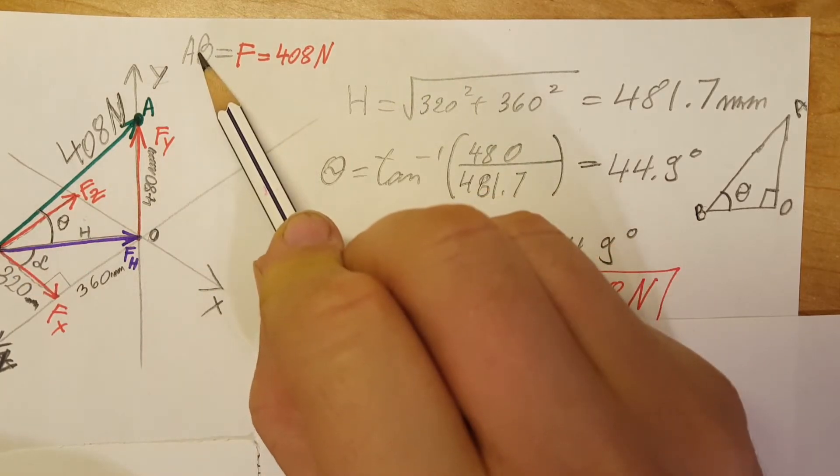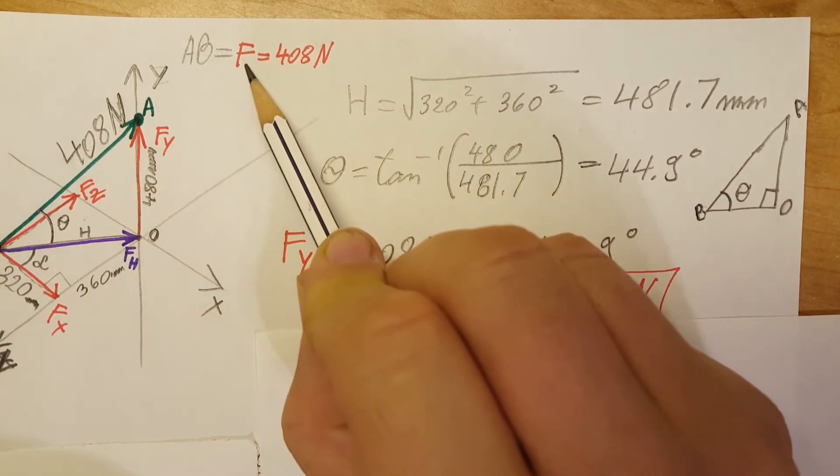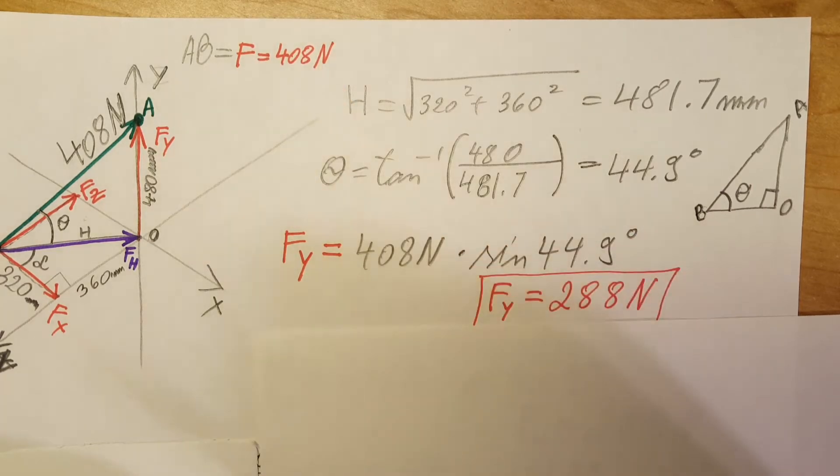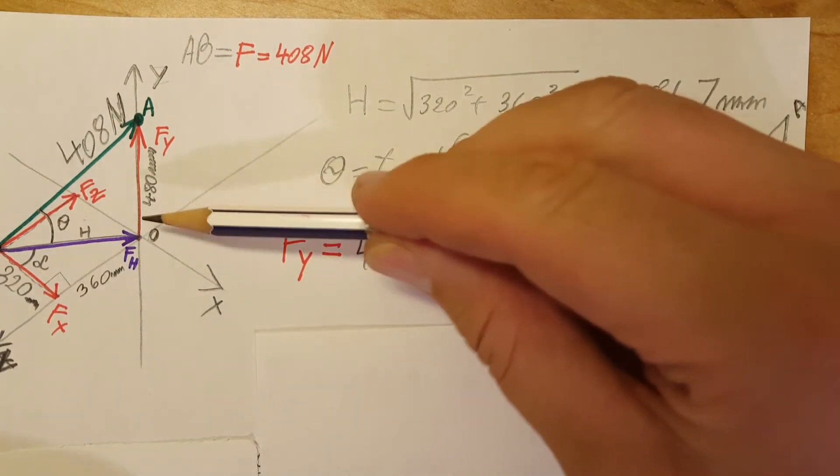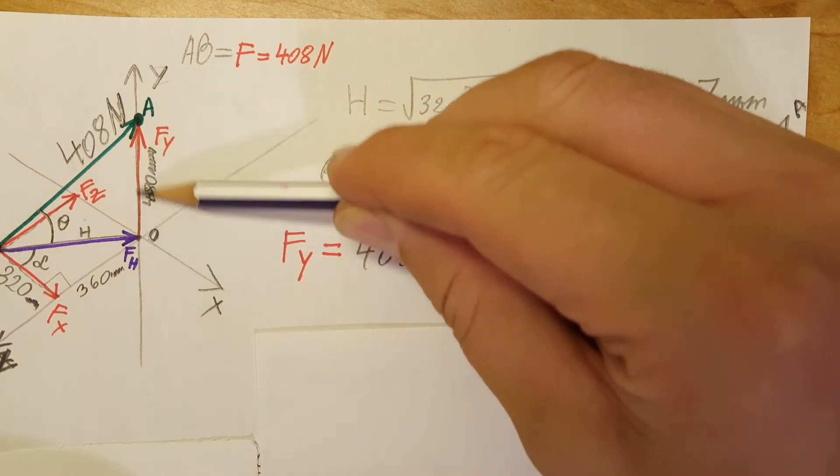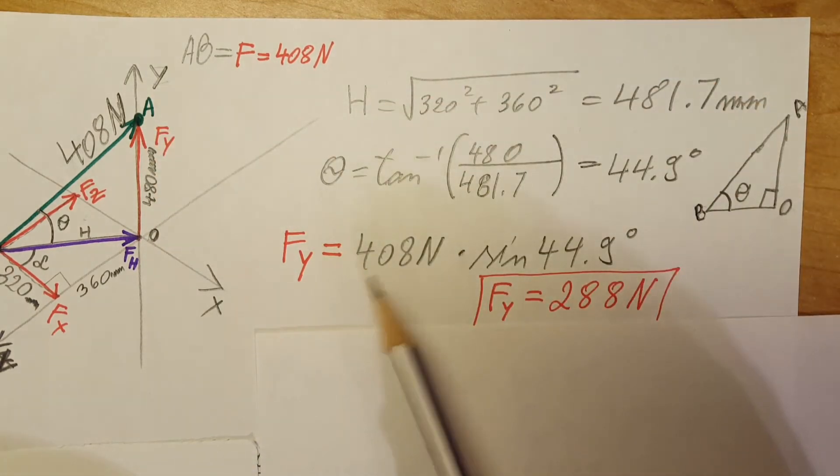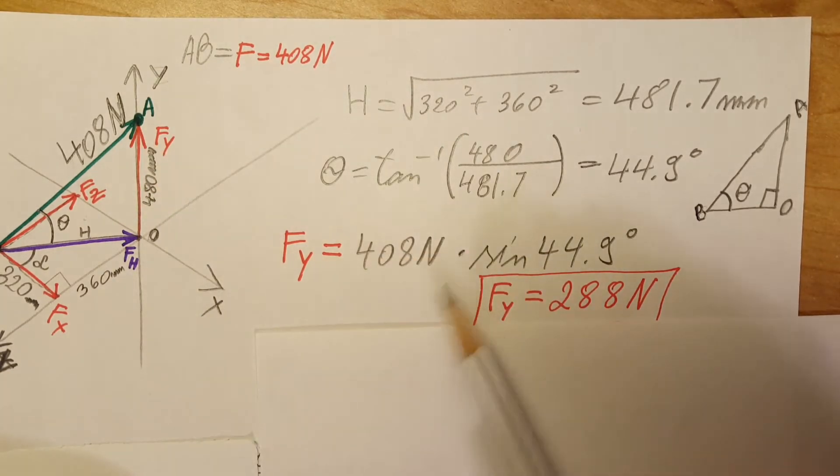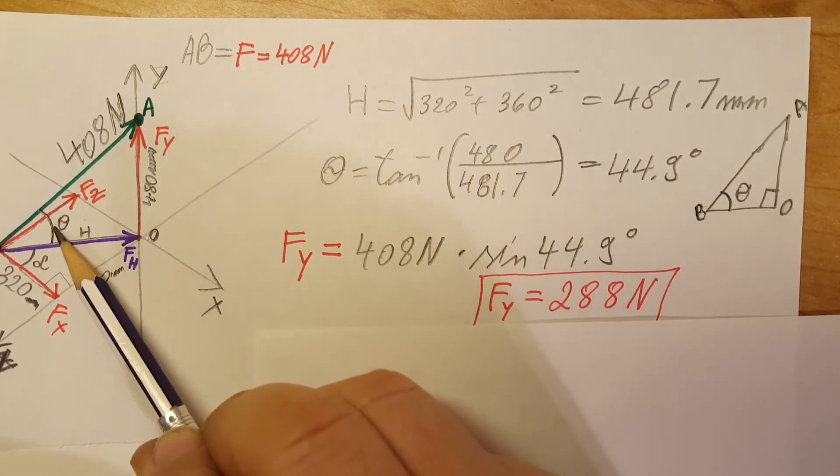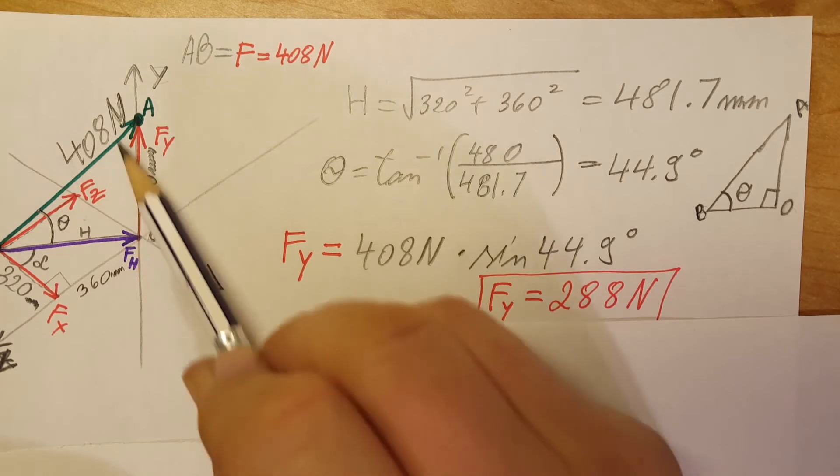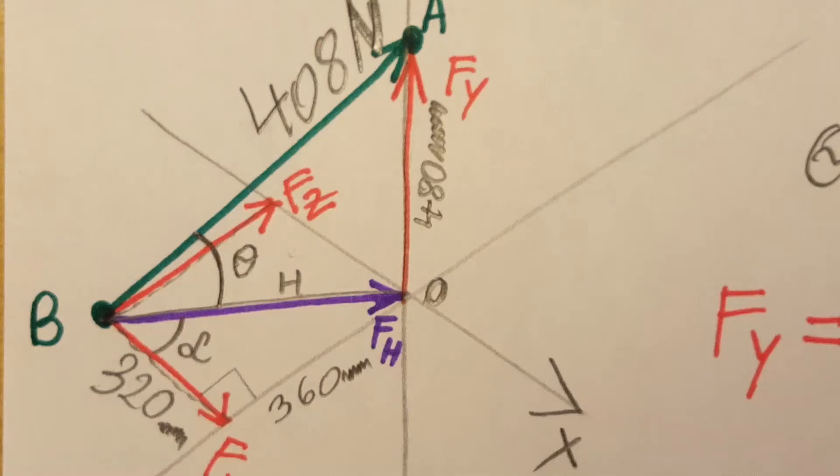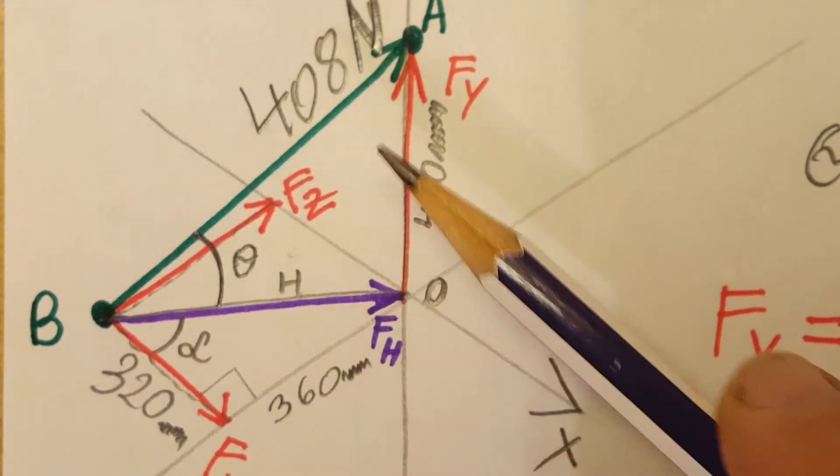So FY, which is this component right here, is 408, which is the hypotenuse, times the sine of theta, which will give us this one. With a calculator we can see that that is equal to FY equals 288 newtons.